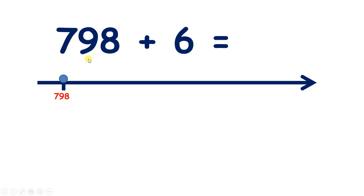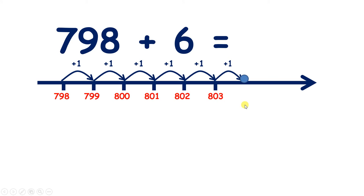Now pause the video and see if you can answer 798 plus 6. So if we count on 6 from 798, we get 799, 800, 801, 802, 803, 804. So 798 plus 6 equals 804.